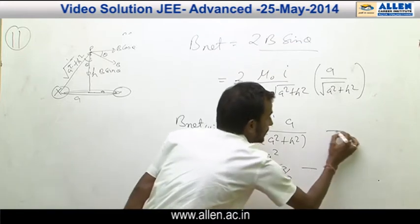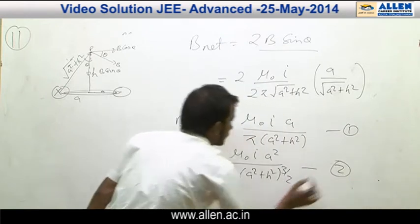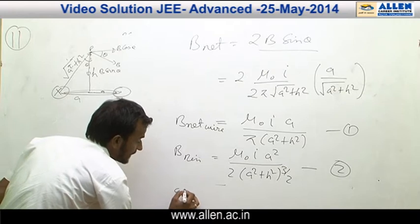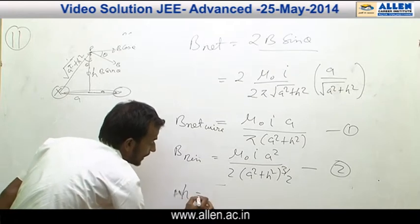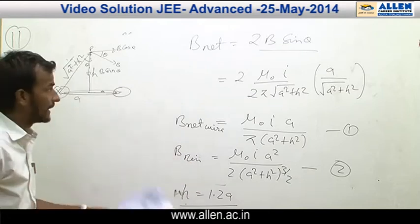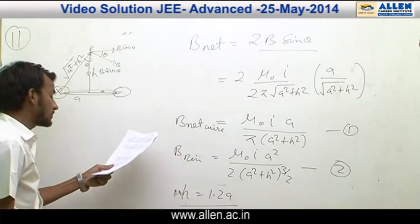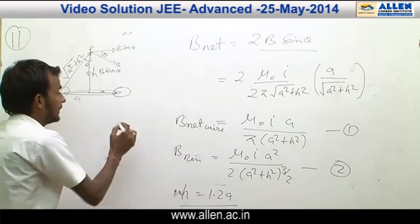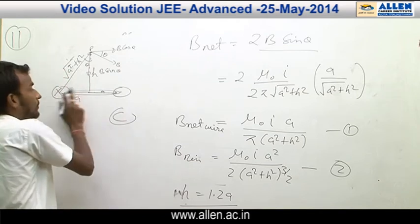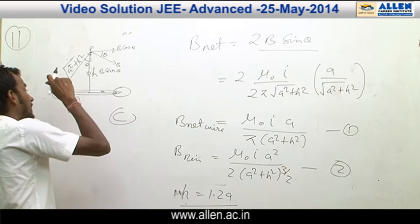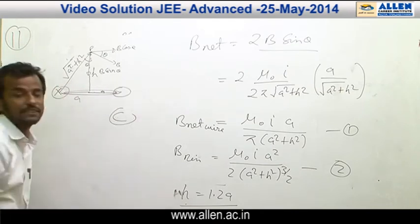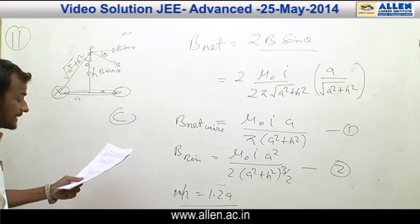By equating these two equations, we will get H² + A² = 1.2A, solving to H = 1.2A. The current in both wires is in opposite directions: current in wire SP is inward and current in the other wire is outward. Therefore, the answer is C.